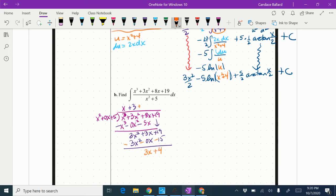So on the top, our remainder would be 3x plus 4 divided by x squared plus 5. So let's rewrite our integral here. So I'm really integrating. This is an equivalent integral to x plus 3 plus 3x plus 4 over x squared plus 5 dx.